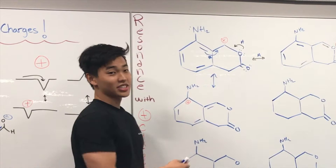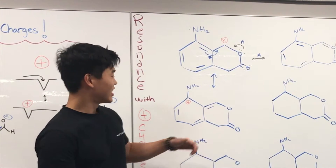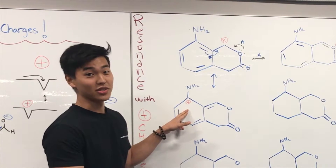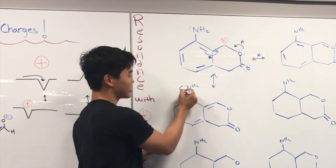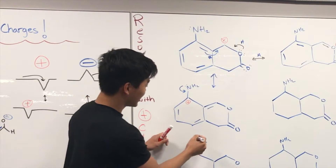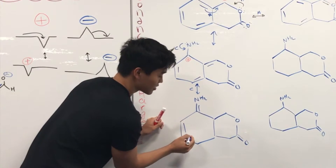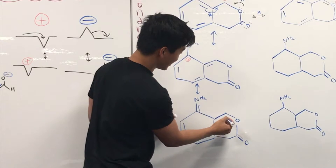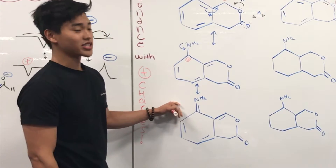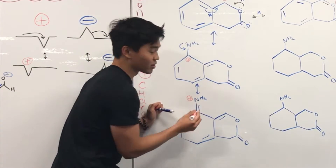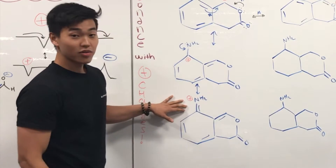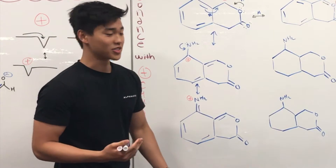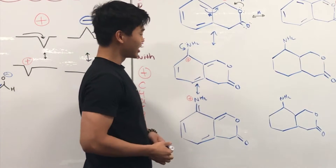Now we have a new positive well, so we need to see what else we can do. Drawing in the lone pairs, we see electrons on nitrogen that want to attack this positive charge, and there's also a bond that can fill the well — so there are two different paths. First, we'll bring the nitrogen lone pairs down toward the positive charge, giving us a double bond with nitrogen. Now we have this new resonance structure and the positive charge is on the nitrogen where the electrons left. We can't do anything more since there are no lone pairs around nitrogen to fill this well, and we don't want to create new charges from the other side.